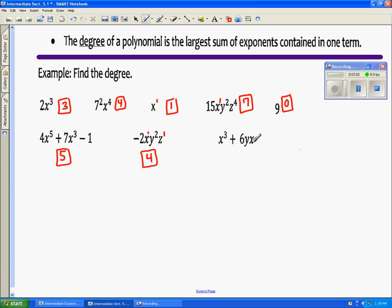This one has two terms. The degree of this term is three. The degree of this one is going to be two. You use the larger of these two, and the overall degree of the polynomial is three.